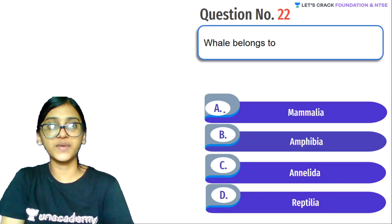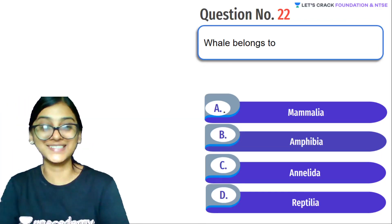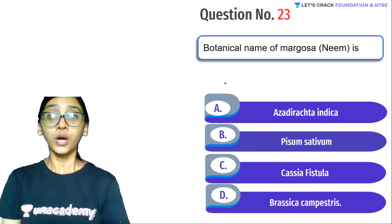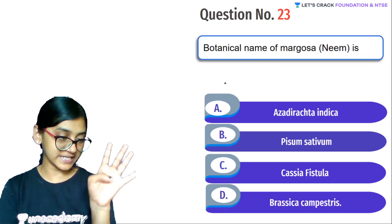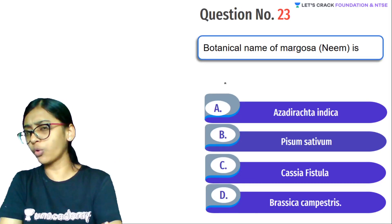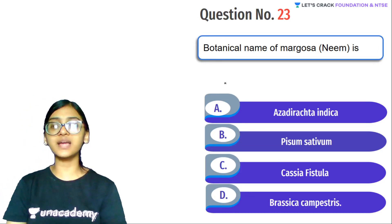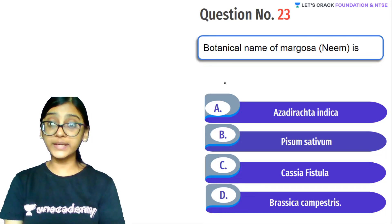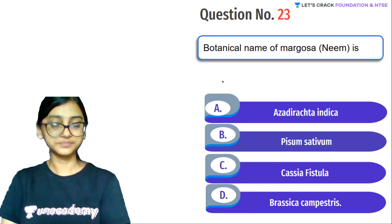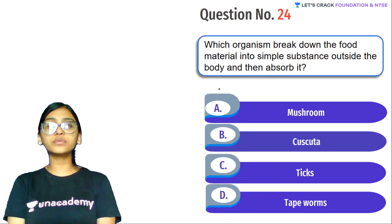Next question: Blue whale — the largest mammal in the world — belongs to class Mammalia. Next question: Botanical name of Neem. Very important — you should know the scientific names of Neem, Brahmi, Tulsi, and other plants around your home. Options: Azadirachta indica, Pyrus sitabum, Cassia, Brassica campestris. The correct answer is Azadirachta indica.